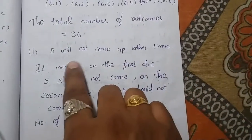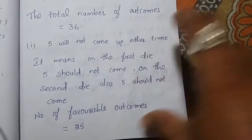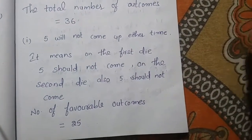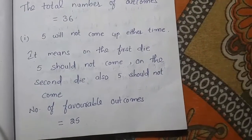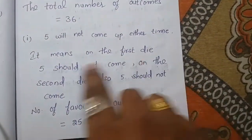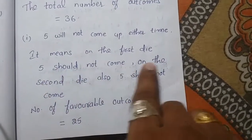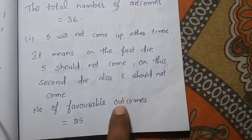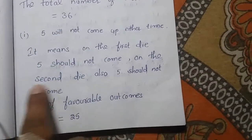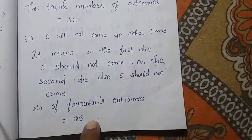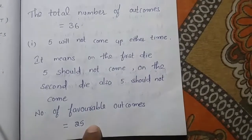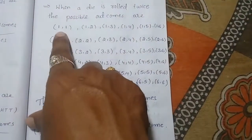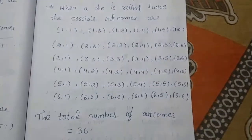For the first question, 5 will not come up either time. This means 5 should not come on the first die and 5 should not come on the second die either. The number of favorable outcomes is 25, since in 25 cases five does not appear on the first roll or the second roll.